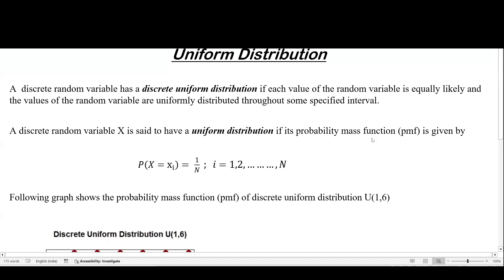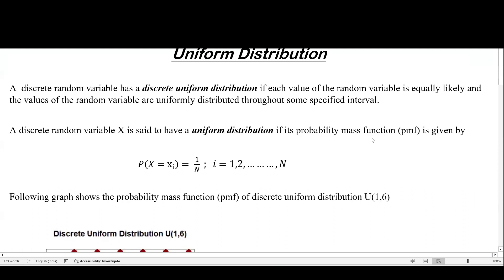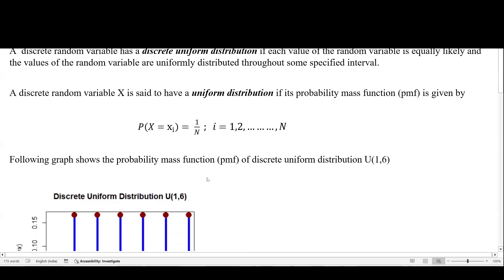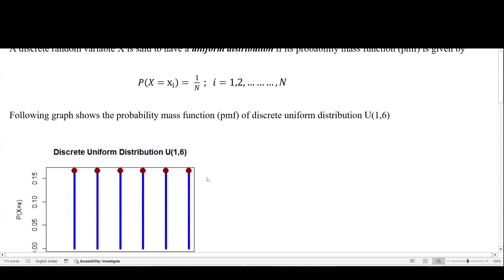A discrete random variable is said to have a uniform distribution if we have the probability mass function p(x) = 1/n, where capital N denotes how many values you have. For a coin, we just have head and tail, so N = 2. For a die, we have 1, 2, 3, 4, 5, 6, so N = 6. This is our probability mass function.